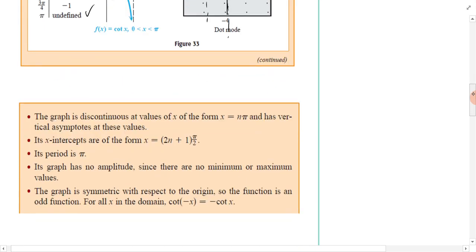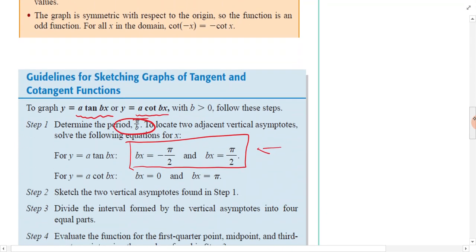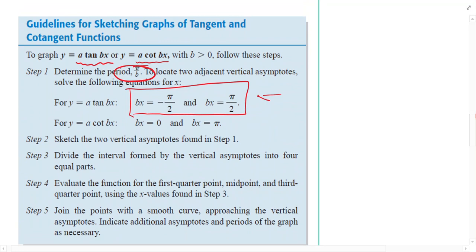If we are going to graph these, there's a different set of guidelines than we used for cosine and sine. You either have a tan bx or a cotan bx. Determine the period pi over b, so instead of 2 pi over b, you're going to use pi over b.